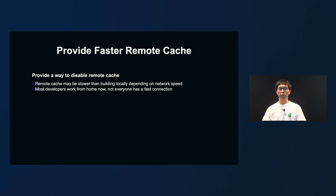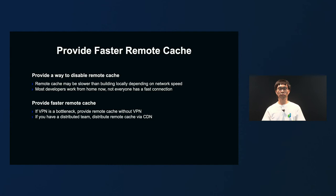Currently, in many companies, engineers work from home most of the time. Due to the network environment at home, it may be faster to build locally than using remote cache. For such cases, it's better to have a way to disable remote cache in build settings. Also, when using remote cache, make sure to optimize the download speed. If your internal VPN becomes a bottleneck, it's better to provide remote cache without VPN. If you have multiple locations for development like LINE, I recommend that you provide distributed remote cache.